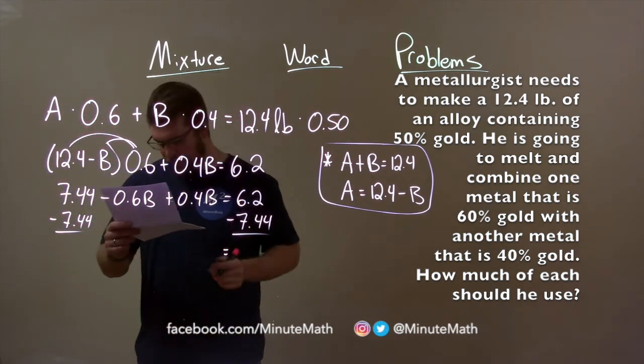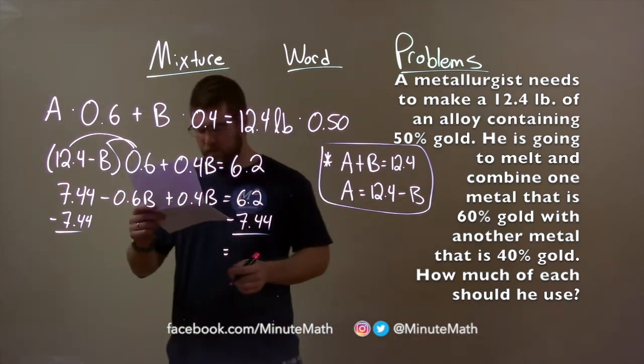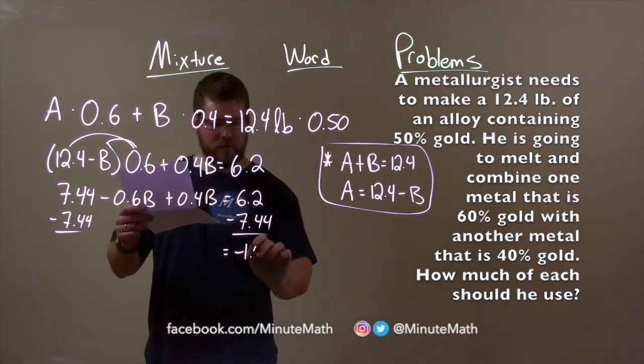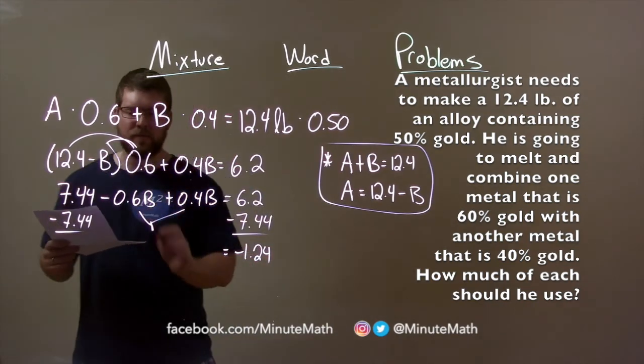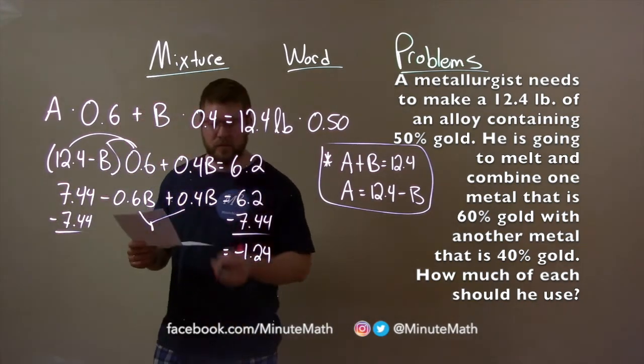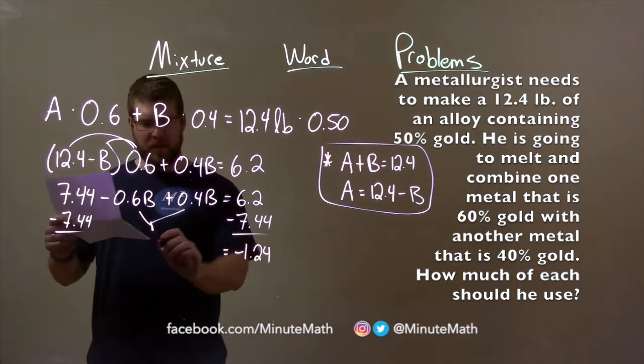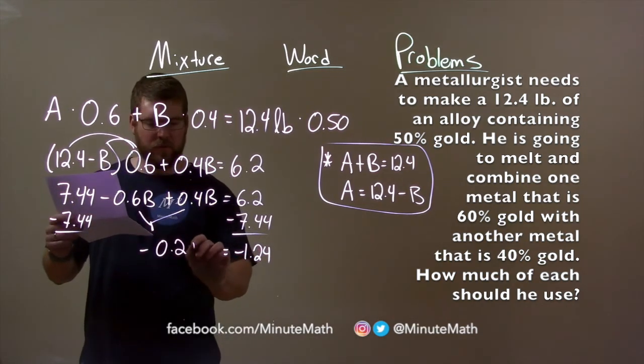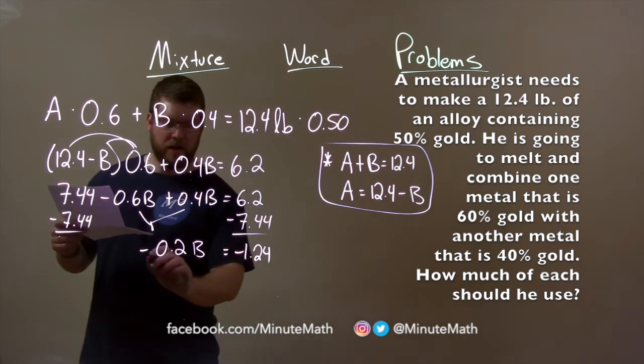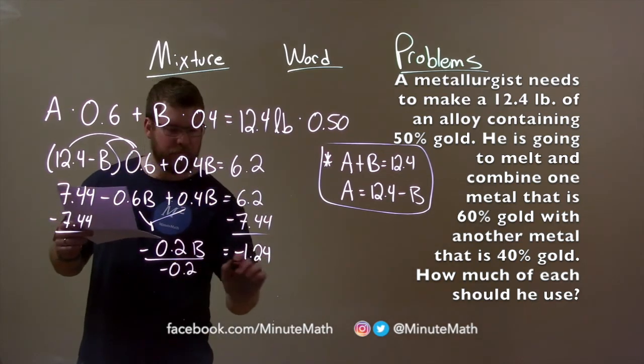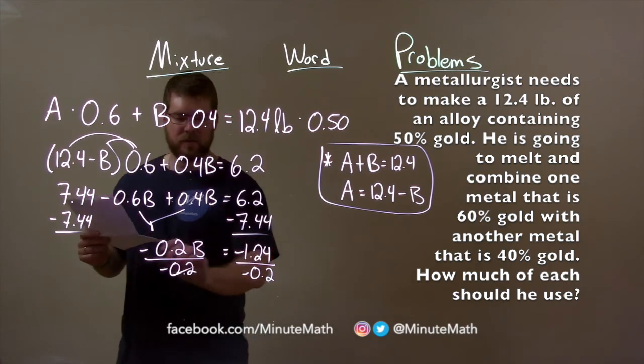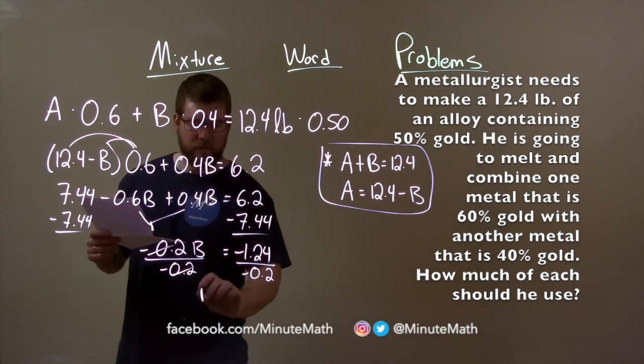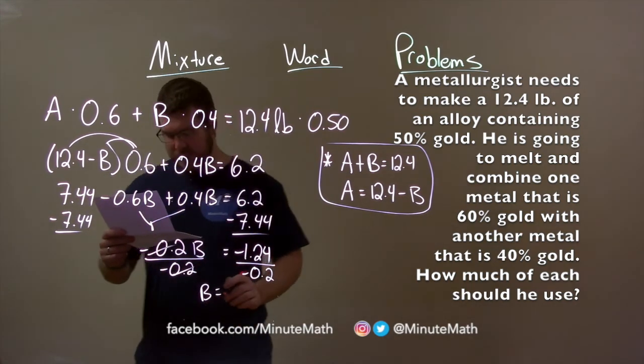We can subtract 7.44 from both sides. And that gives us 6.2 minus 7.44 and negative 1.24. Combine these two together. Negative 0.6B plus 0.4B is a negative 0.2B. Divide both sides by negative 0.2. And remember, by dividing by the negatives here, it becomes a positive. B is now a positive 6.2.